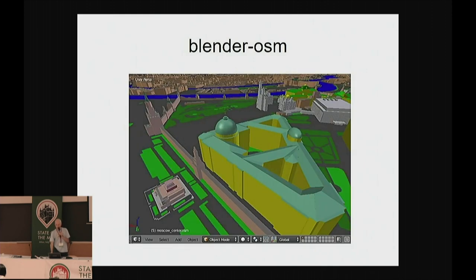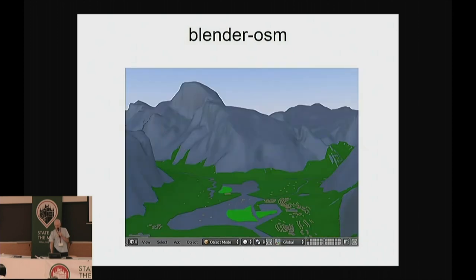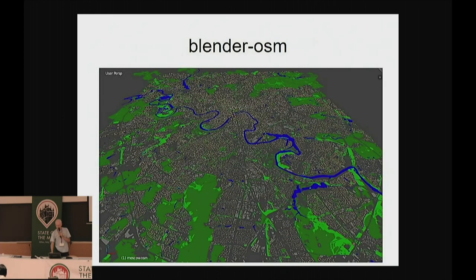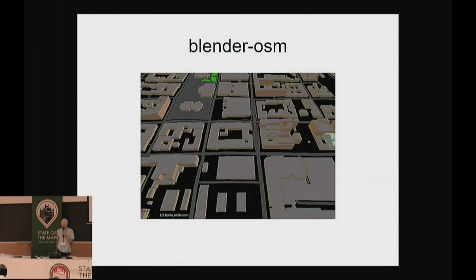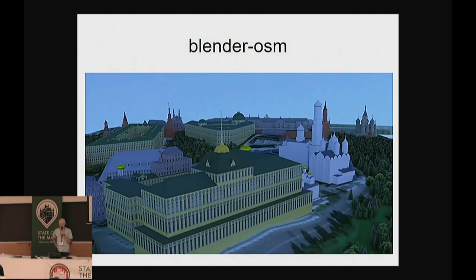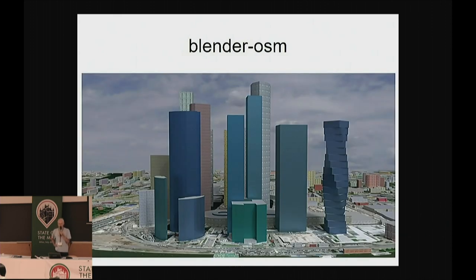Here are some pictures illustrating what it does right now — the Moscow Kremlin, roof shapes, Red Square. It also imports terrain from the SRTM project. It's capable of importing the whole of Moscow, about 50,000 buildings. It also imports roads in a simple way. That's a business district in Moscow with skyscrapers.